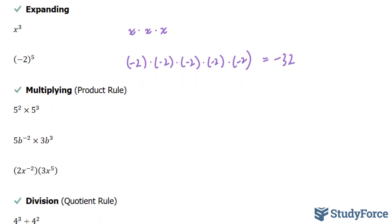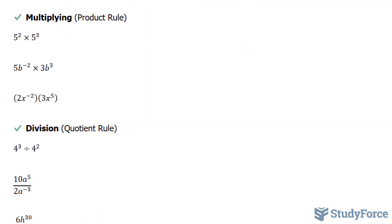The next thing we'll look at is multiplication, referred to as the product rule according to the laws of exponents. If the bases are the same and they're being multiplied, you will keep the base the way it is — so we keep it as 5 — and you add the exponents. So 2 plus 3 is 5, and that is your final answer.